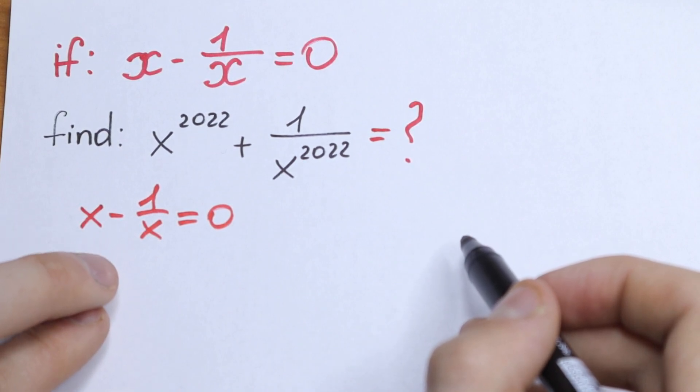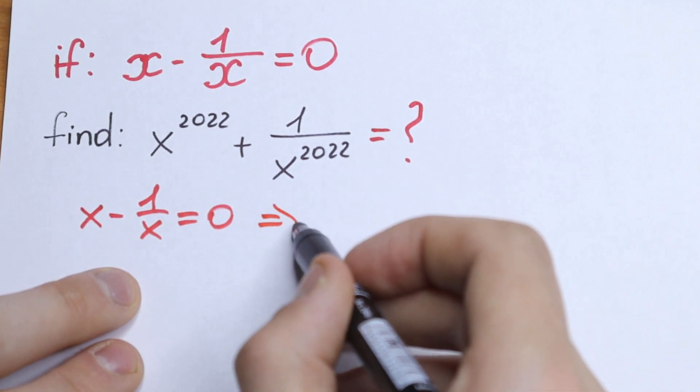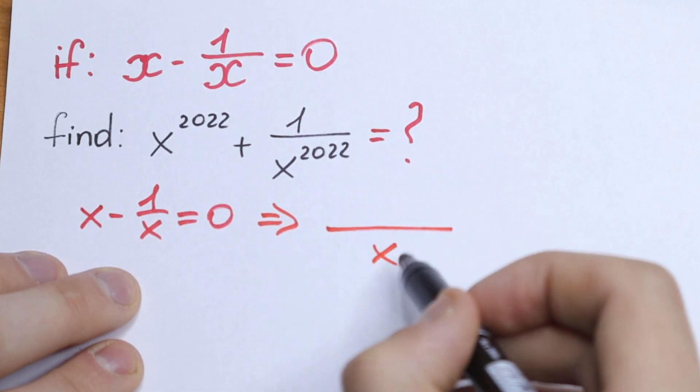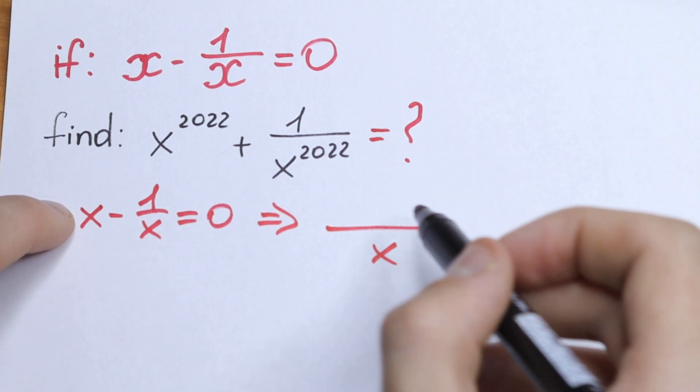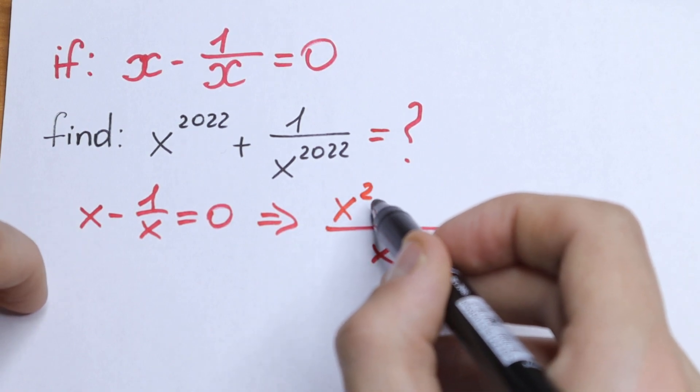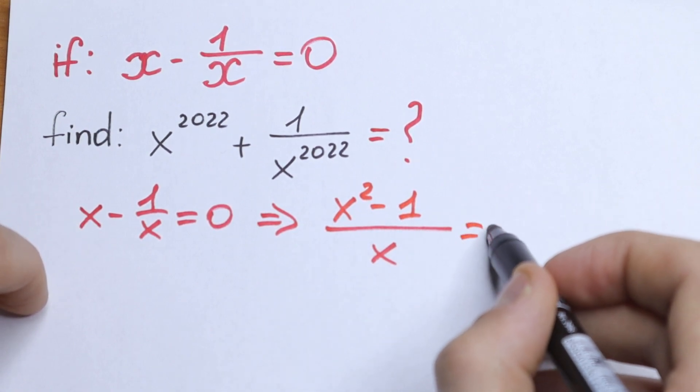If we find our common denominator, what will we have? We will have that x will be in our denominator and we will have x squared minus 1 in the numerator. If we put a common denominator, x squared minus 1 equal to 0.